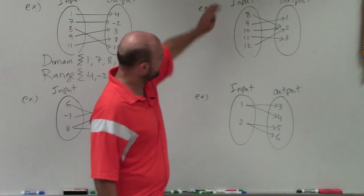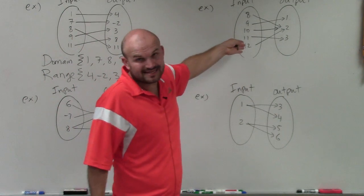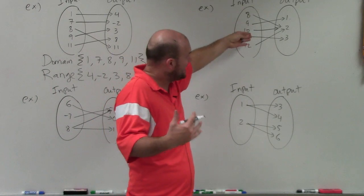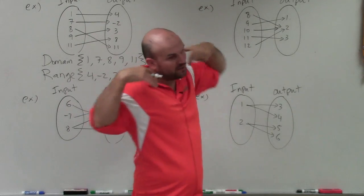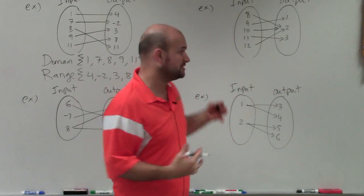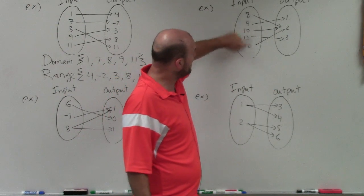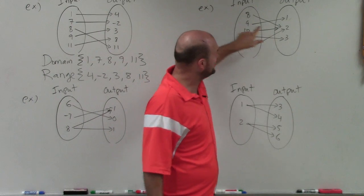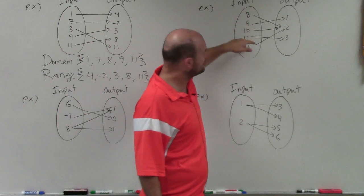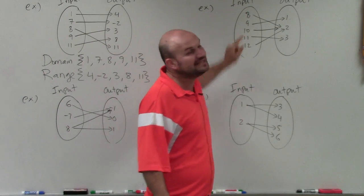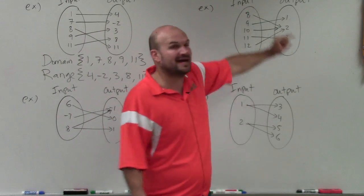Over in this example, again, input represents the x values, which is your domain, and the output represents your range. Again, remember, for it to have domain and range, it has to be a function. So therefore, we want to make sure that they all uniquely map. You can see that they all go to 2, or most of them, 8, 10, and 12 all go to 2, but they only uniquely go to 2. They don't go to any other number. So therefore, this is a function.